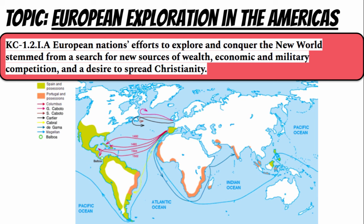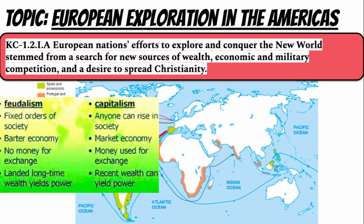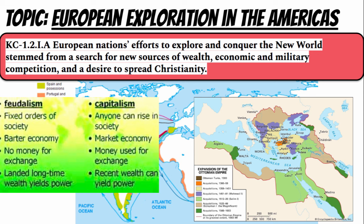The next big theme is European exploration in the Americas. European nations' efforts to explore and conquer the new world stem from a search for new sources of wealth, economic and military competition, and a desire to spread Christianity. The decline of European feudalism led to a rise of powerful nation states looking for new sources of wealth and trade. Resources such as gold and silver would be in demand, and the process of European colonization will further the move towards capitalism. In addition, the Ottoman Empire threatened very profitable trade routes in the eastern Mediterranean and made accessing the Asian market much more difficult, so nations such as Spain and Portugal began to send out expeditions into the Atlantic looking for a new way to get to Asia.